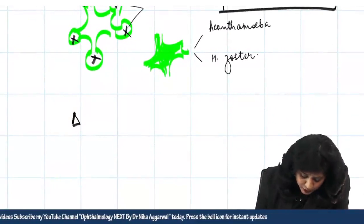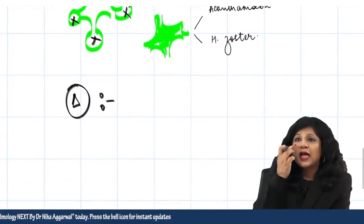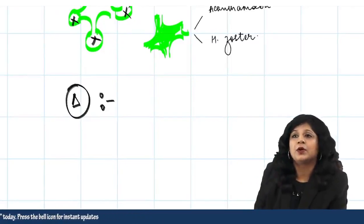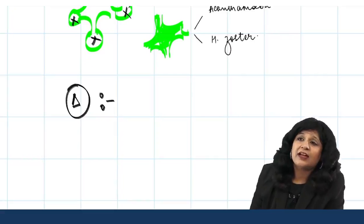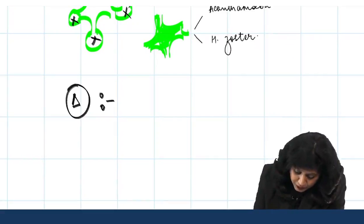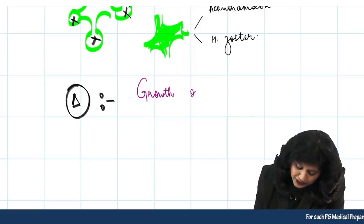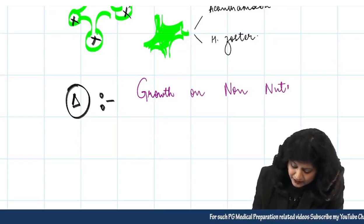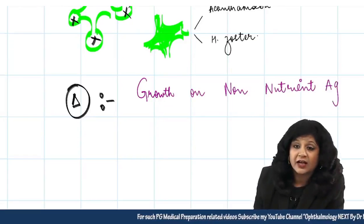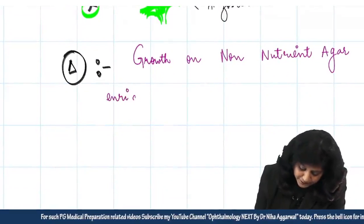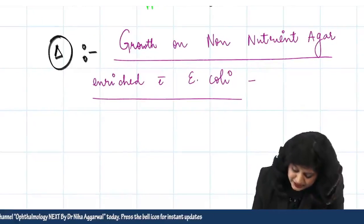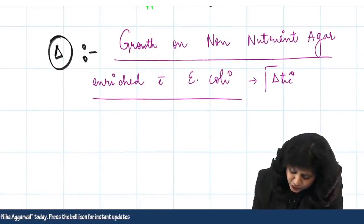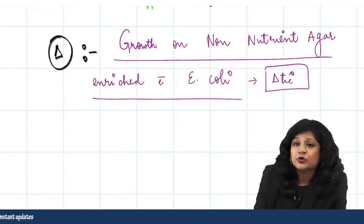If you are confused between diagnoses — the patient has contact lens use, macrophage-like cells, a dendritic pattern, and vegetative matter trauma — how do you confirm? You check growth on non-nutrient agar enriched with E. coli. Growth on non-nutrient agar enriched with E. coli is very diagnostic for Acanthamoeba. This rules out option C, which states they grow best in thioglycolate broth — that is wrong.